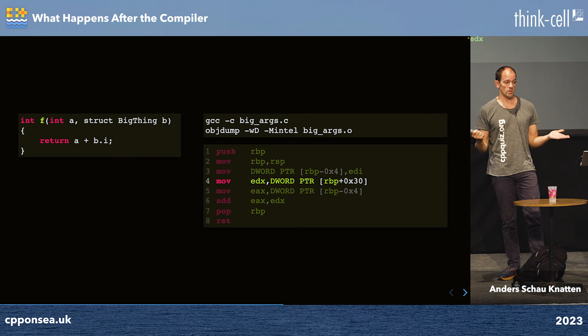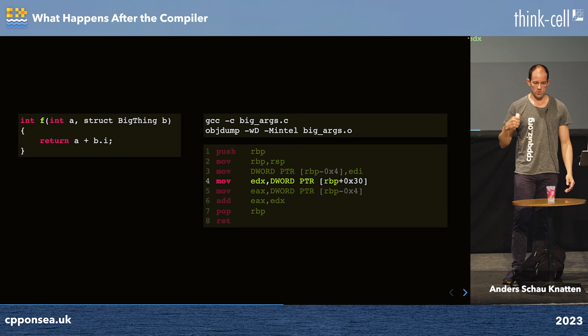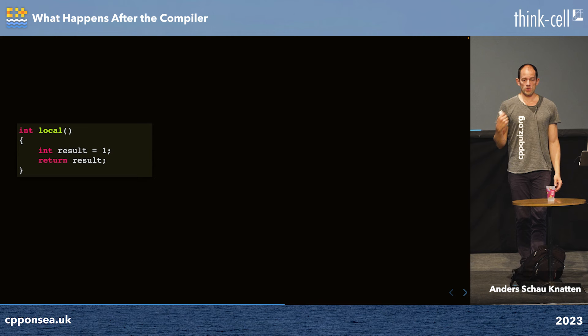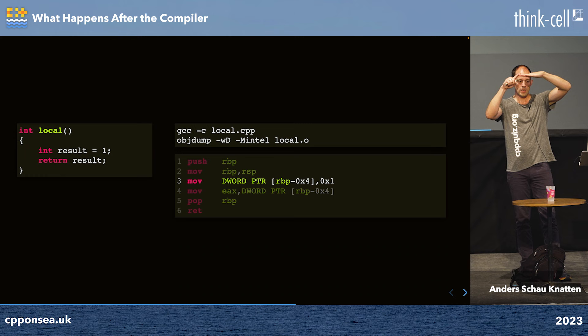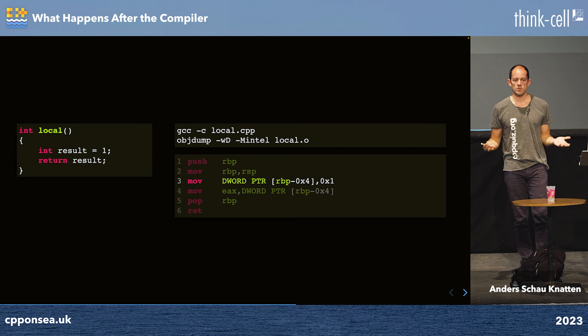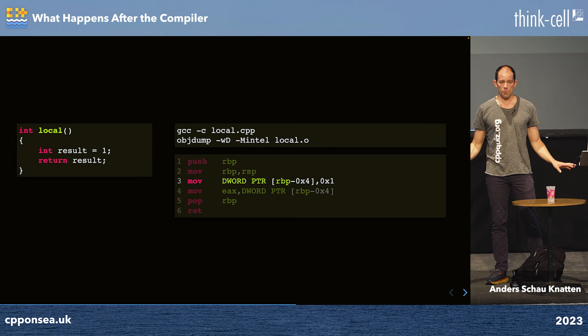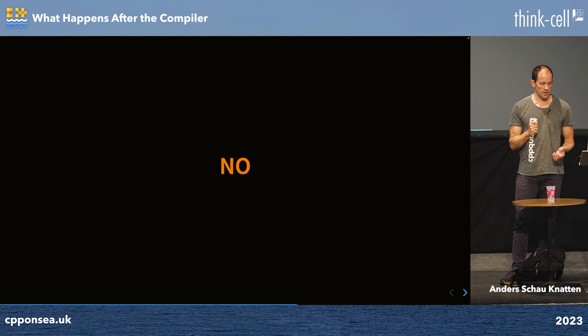The same goes for local variables. If I have an int result, it's just stored relative to RBP, going a bit into my stack frame. Local variables, just like parameters, use the stack. All of this is simple with no magic going on. The question then is: is all data that simple? And whenever I ask if it's that simple, the answer is no.